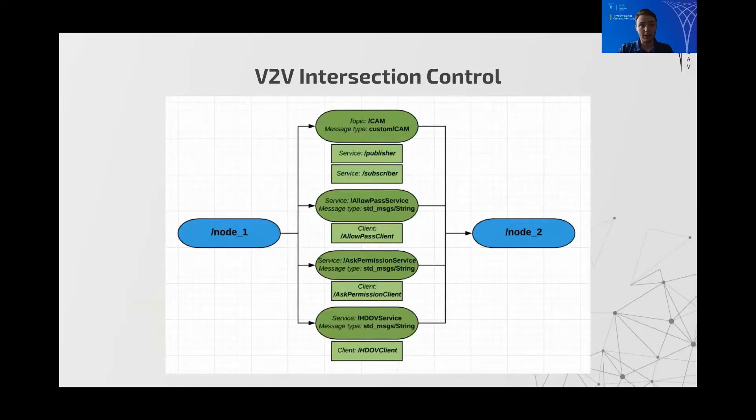So this slide is showing the software design decisions around the message types and the ROS nodes that will be interacting with them for the intersection control algorithm. It's important to figure out the decisions made on each vehicle so that the solution is scalable.